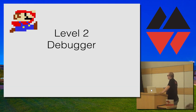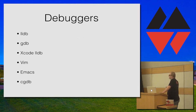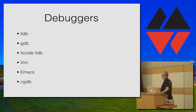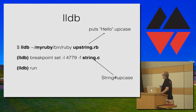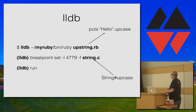Up to level two. Because we will be working with C, it's a good idea to have a working debugger. There are multiple options — if you're on Mac you can use LLDB, if you're on Linux you can use GDB. You can even use Xcode to debug your code. Here's a simple example of how you would debug a simple script.